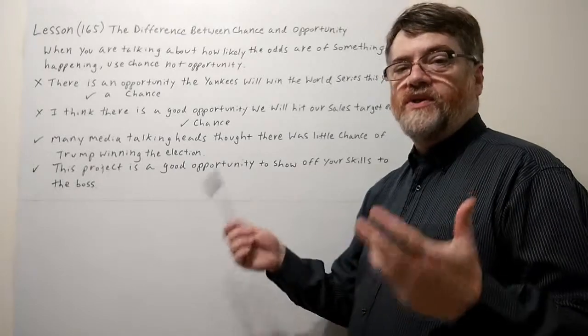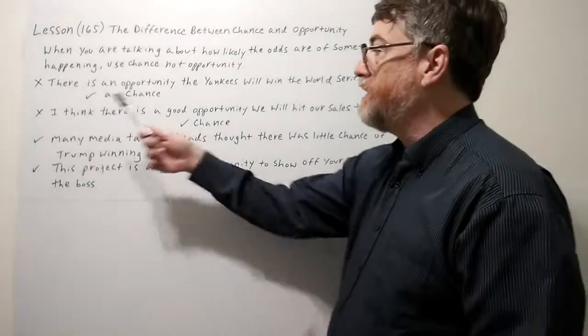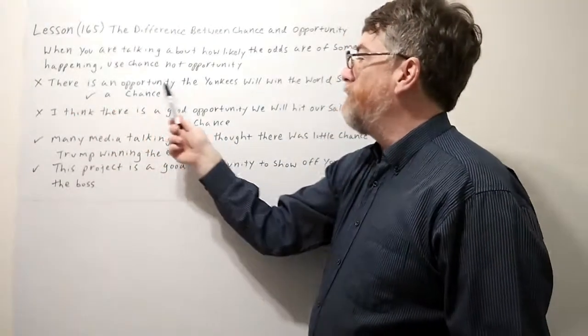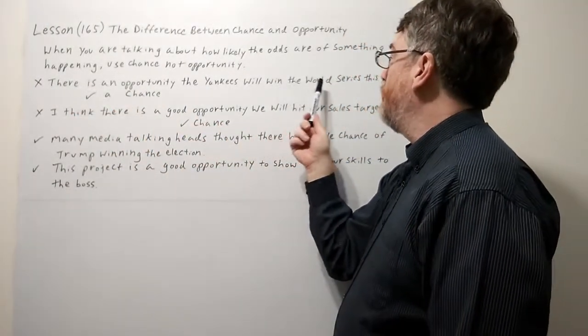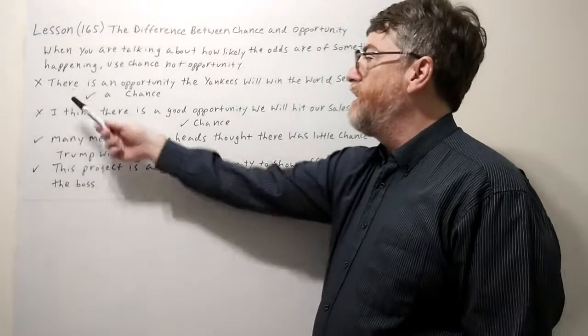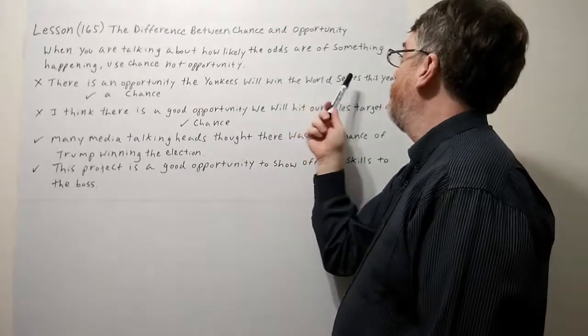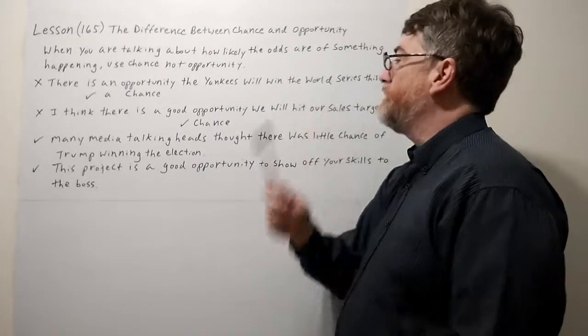So let's look at the first example here, especially one where a student might make a mistake with the X. There is an opportunity the Yankees will win the World Series this year. Now in this case you mean there is a chance. A chance would be correct. The Yankees will win the World Series this year.